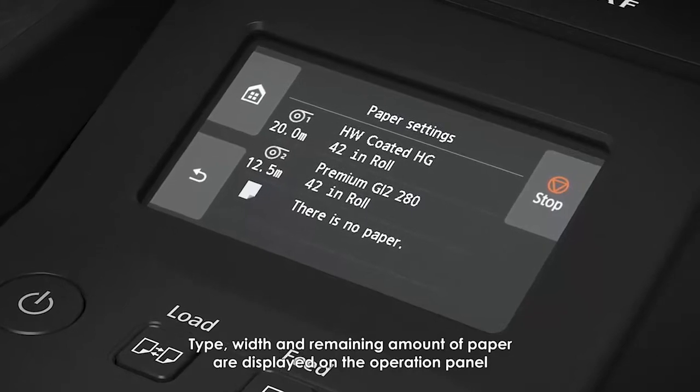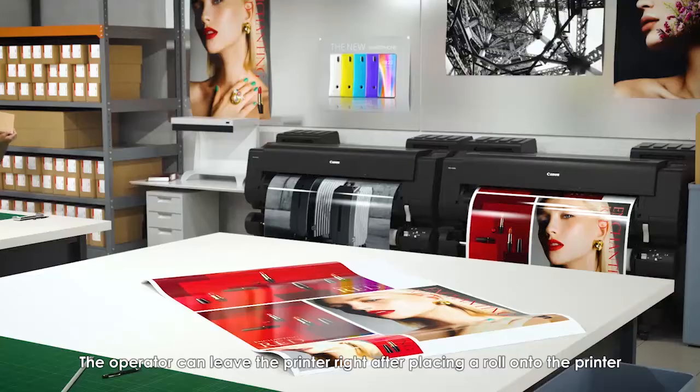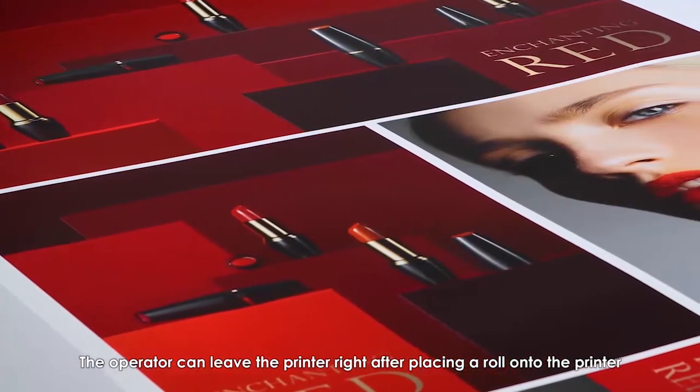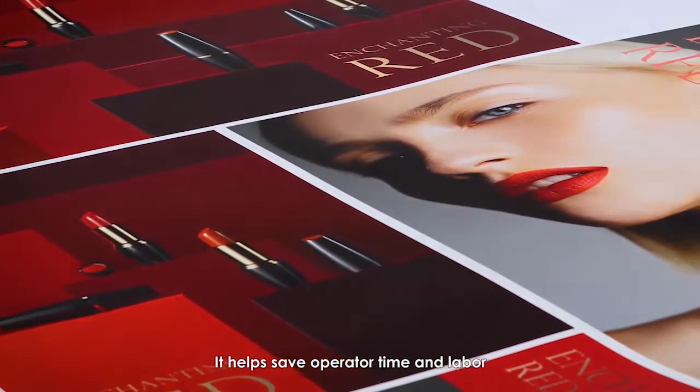Type, width, and remaining amount of paper are displayed on the operation panel. The operator can leave the printer right after placing a roll onto the printer. It helps save operator time and labor.